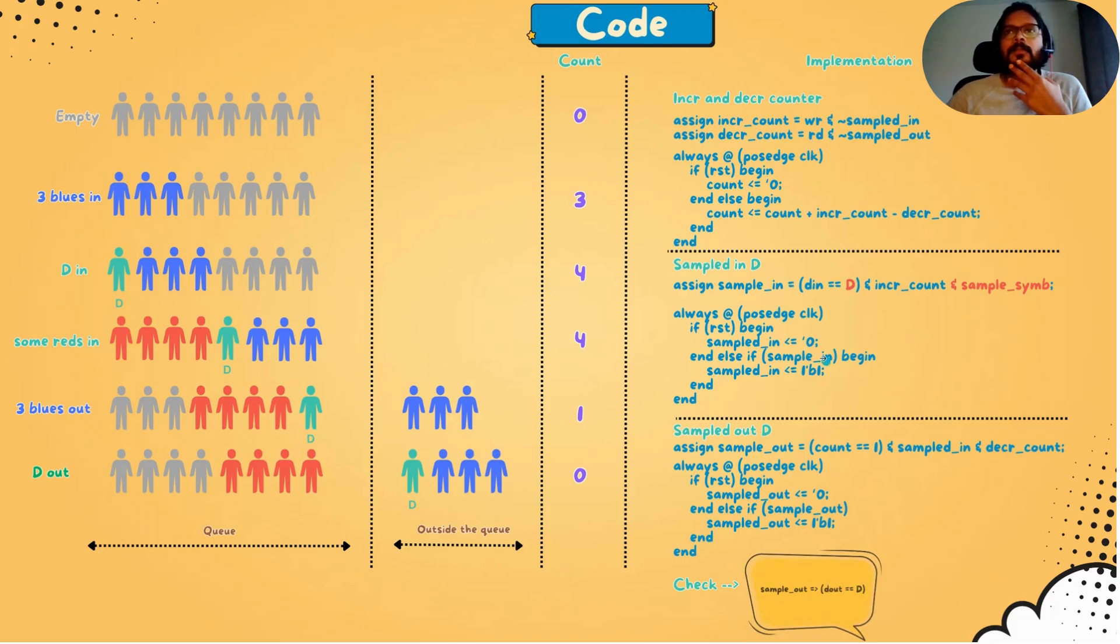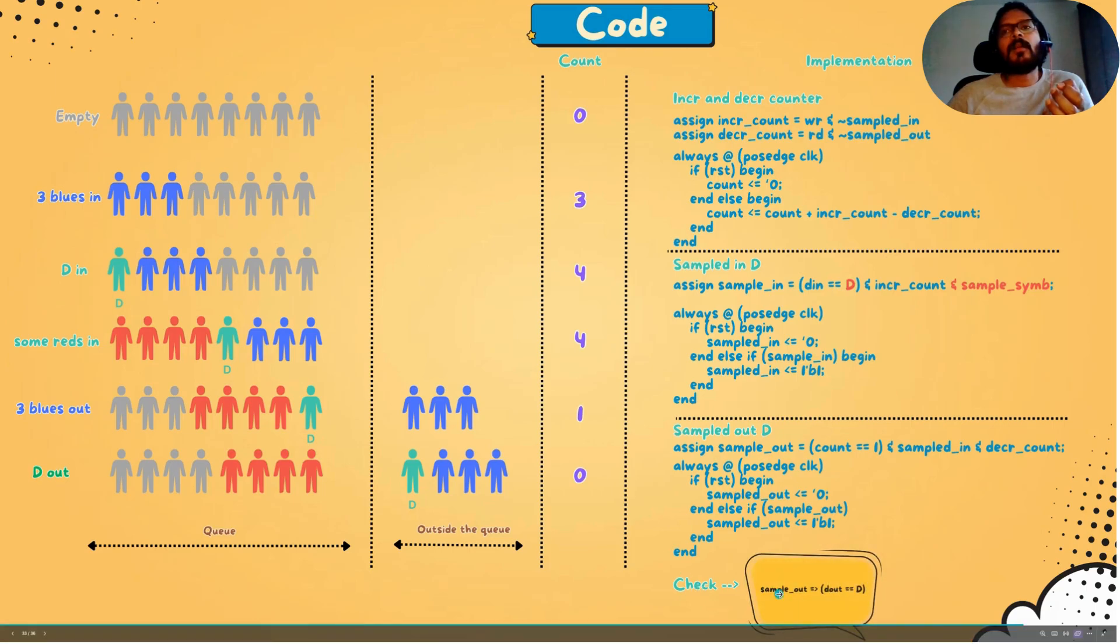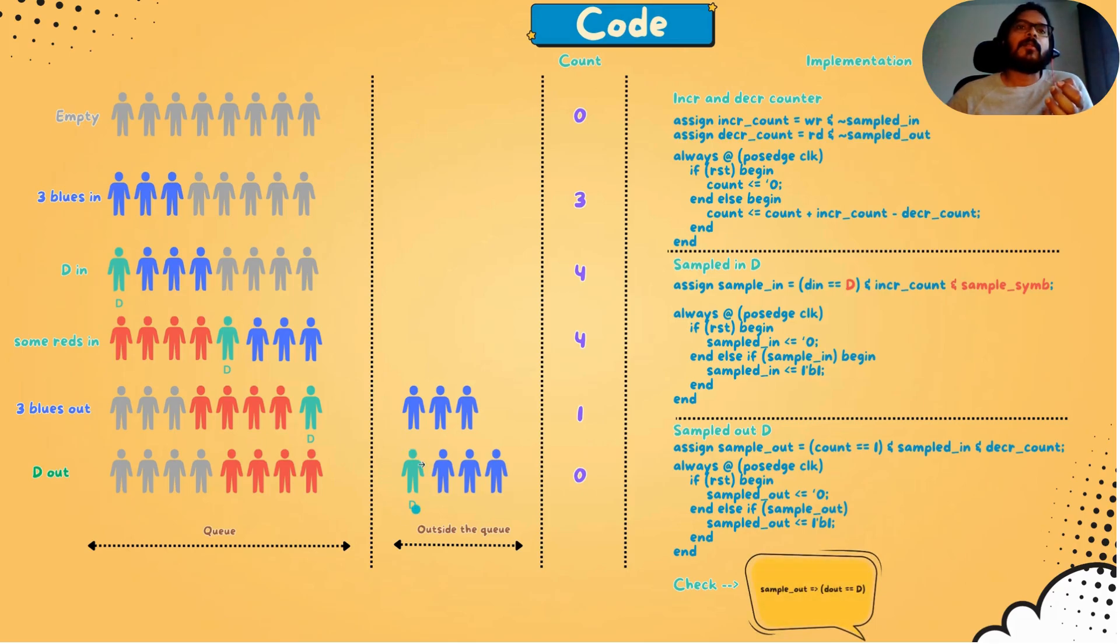And when do we decrement the counter? We decrement the counter when a read happened from the FIFO and then sampled_out is not set. There's a similar sticky flag similar to sampled_in that's used in the decrement count part. And this particular signal sampled_out is defined like this: when the counter is one and sampled_in was set - the sticky flag sampled_in is high, that means sometime in the past D got in - and then a decrement count, and there is a read happening from the FIFO. So in the next cycle, D_out should be D. That means when the counter is becoming one, in the next cycle, that data coming out of the FIFO should be D, capital D.